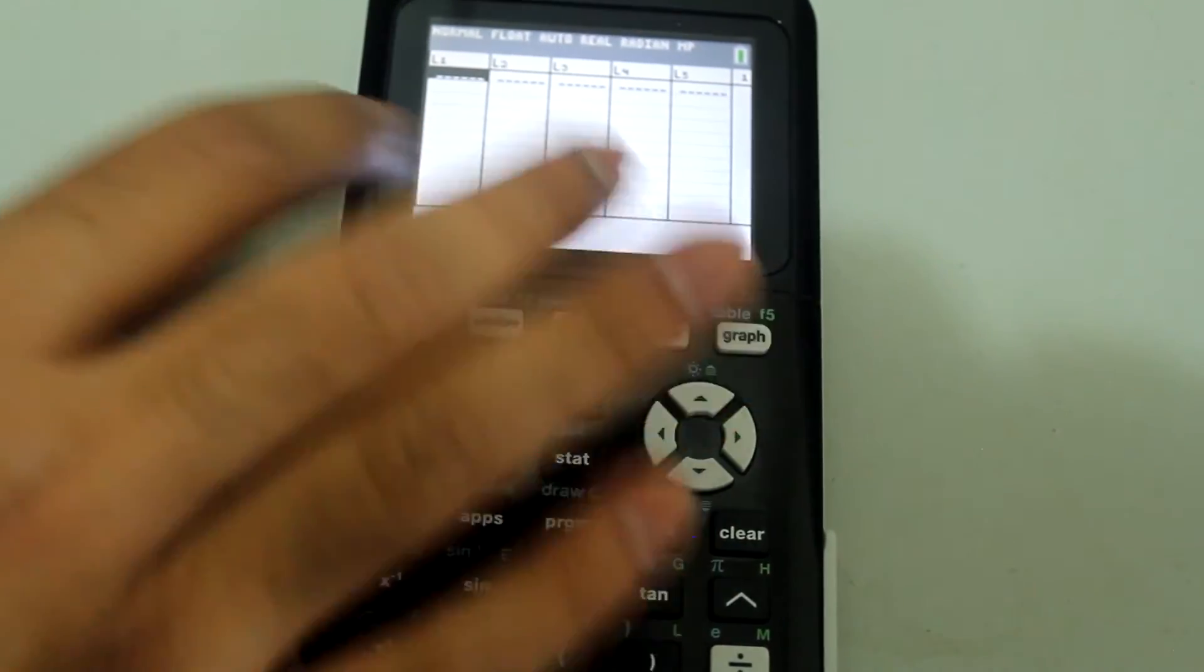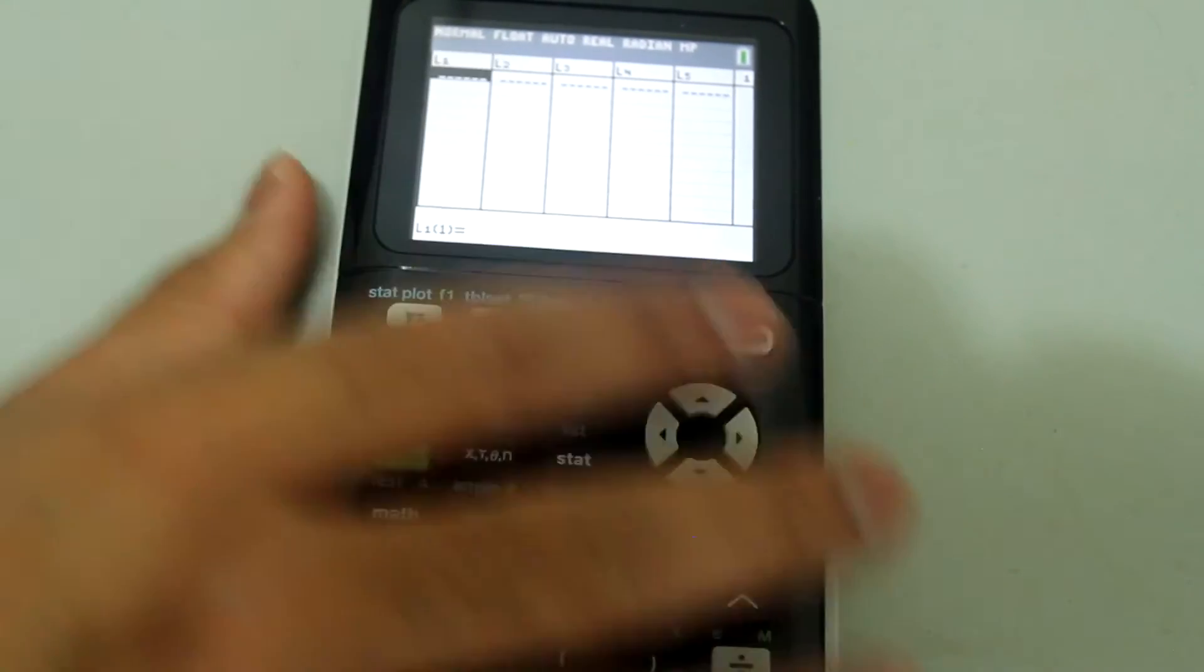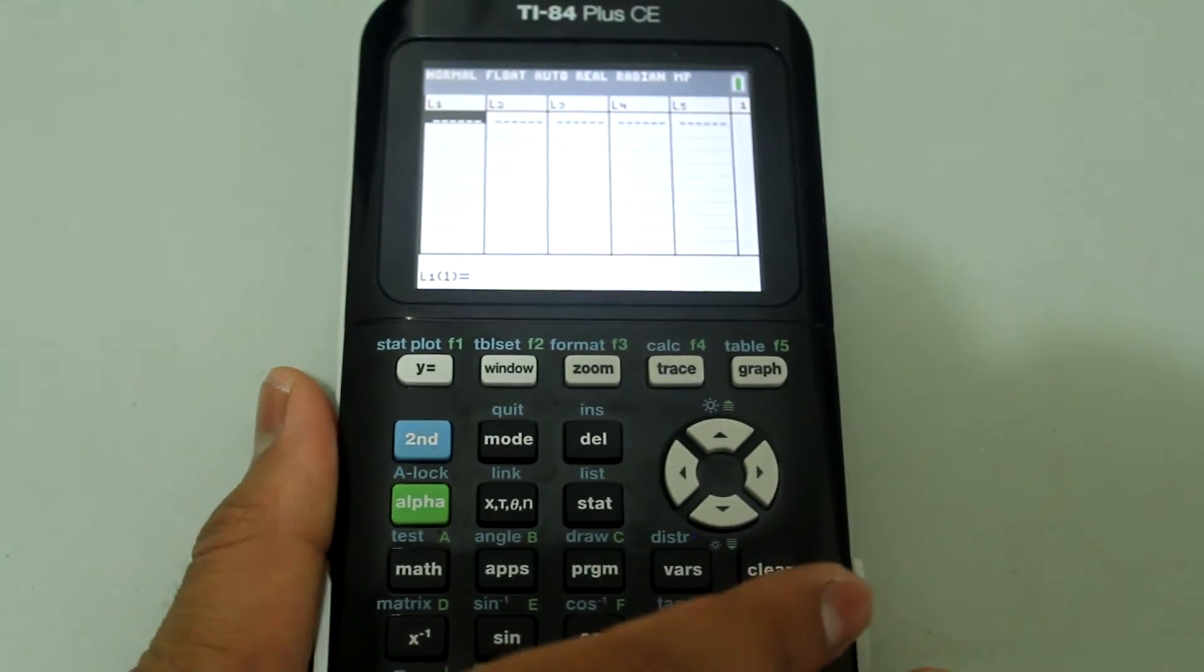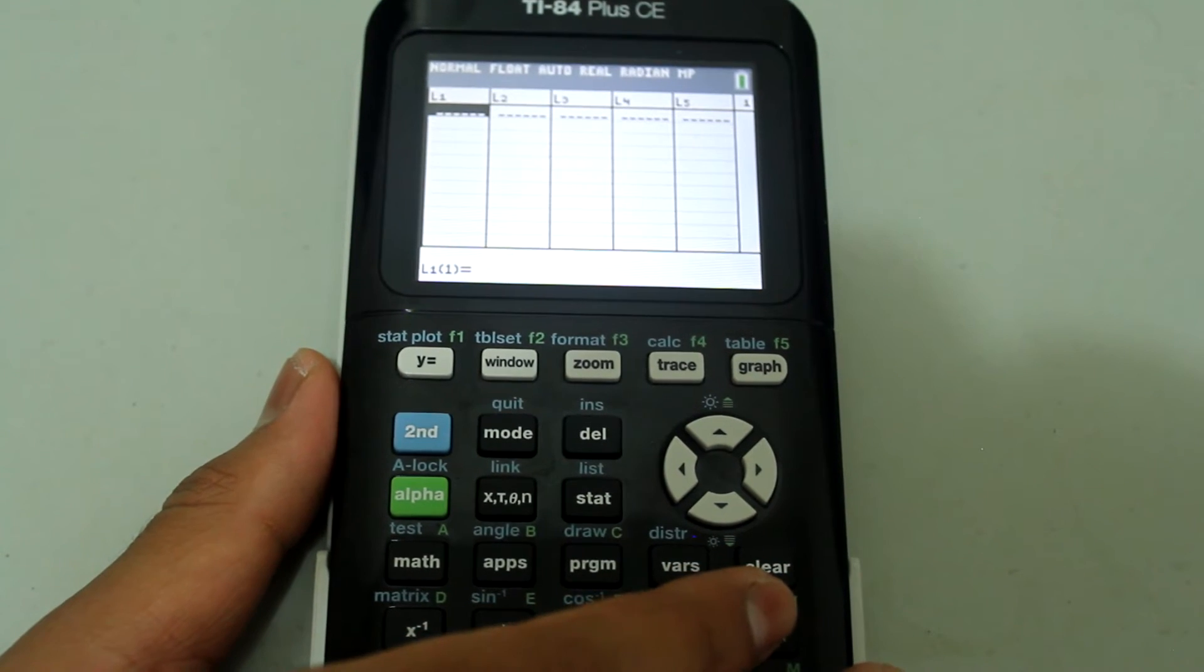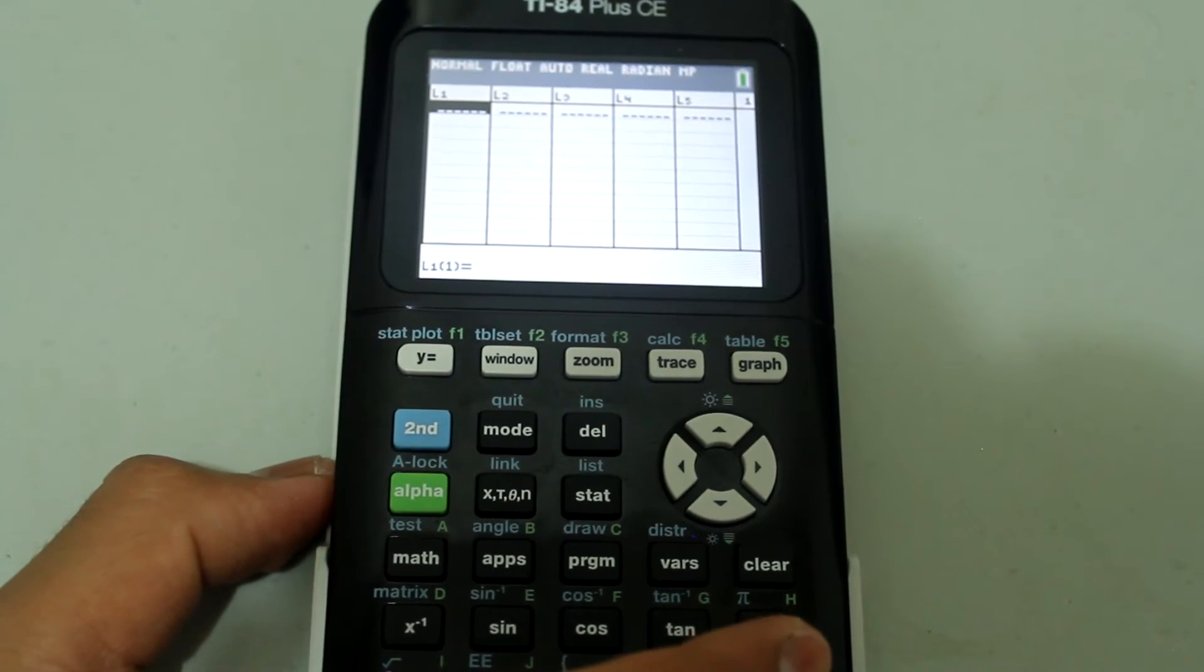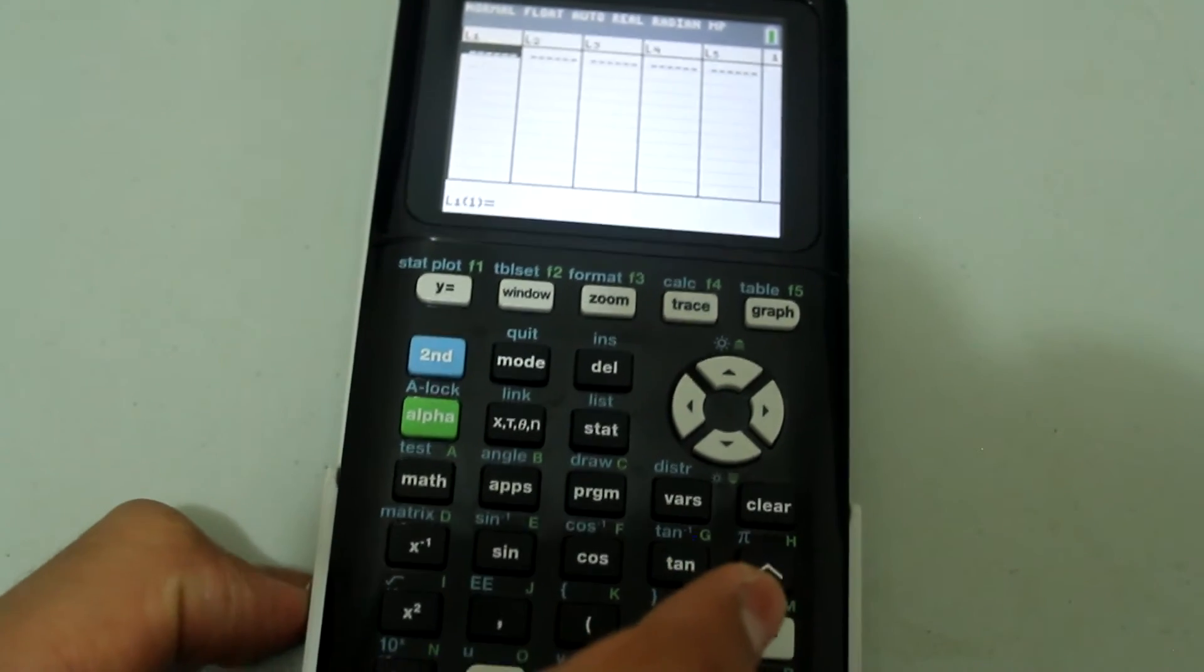And now I see the lists L1, L2, L3 and so on. And I already saw that L1 are the x values for the stat plot 1 and L2 is the y values. So I'm going to just type in a few random values just to show you what happens when you have values in for the plot.